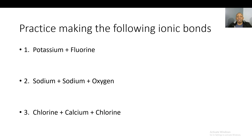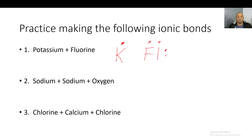Now you will practice making the following ionic bonds. First: potassium and fluorine. Potassium has one valence electron; fluorine has seven valence electrons. Potassium is going to give its one valence electron to fluorine, which gives potassium a positive one charge and gives fluorine a negative one charge.